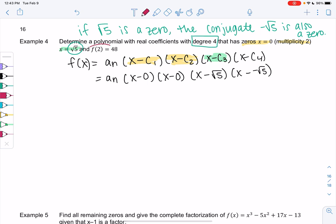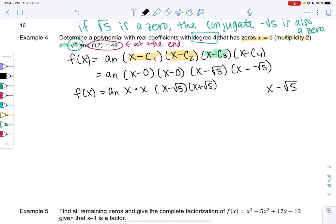So we'll use f of 2 equals negative 48. We'll use this at the end. So let's do some simplifying and then come back to that. So we have f of x. Let's just leave a_n as is. I'm going to multiply on a table on the side. Go ahead and multiply wherever you want to multiply.